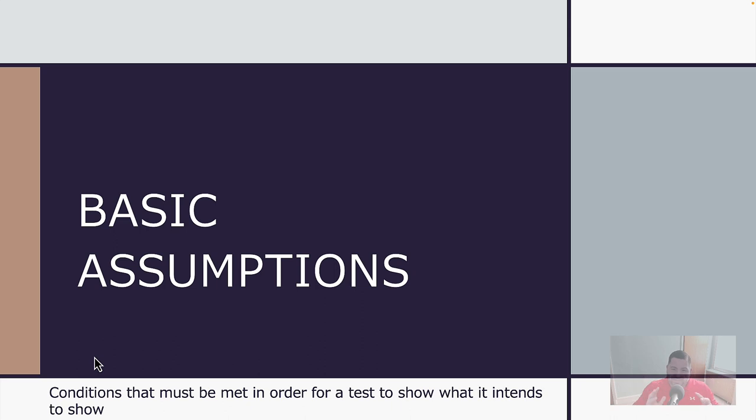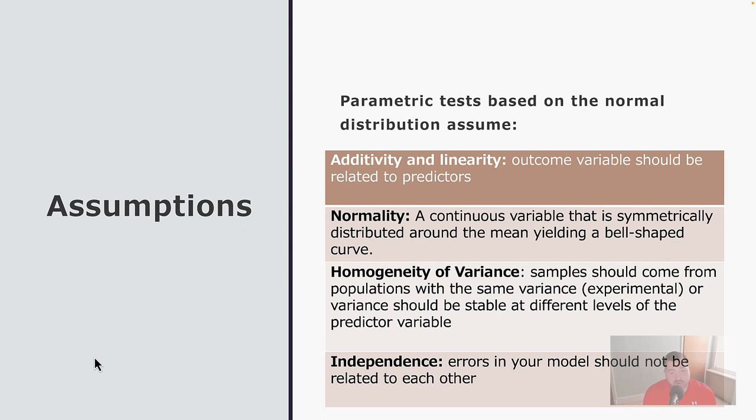So the same principle works with statistical analyses. Every procedure that we perform this term is going to have boundaries or what we call basic assumptions. And basic assumptions are a series of conditions that must be met in order for these tests to work in the way that they were designed to work. And if we have violations to those assessments, then we could possibly throw the entire analysis into question and have to come up with a different way of answering that question. So assumptions are conditions that need to be met in order for the data to show what it intends to show. And there are four major what we call parametric basic assumptions.